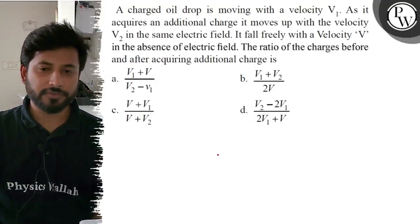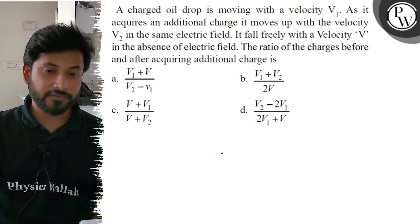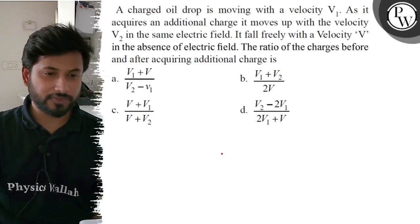A charged oil drop is moving with velocity V1. As it acquires an additional charge, it moves up with velocity V2 in the same electric field. If it falls freely with velocity V in the absence of electric field, the ratio of charges before and after acquiring additional charge is: